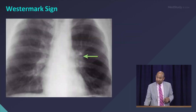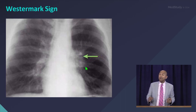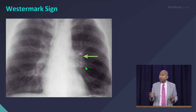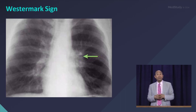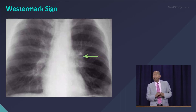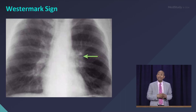This is called Westermark Sign — it's the lack of vascular markings. Over here you see lots of markings; over here, no markings. So it's a pretty large PE. They call that Westermark Sign.